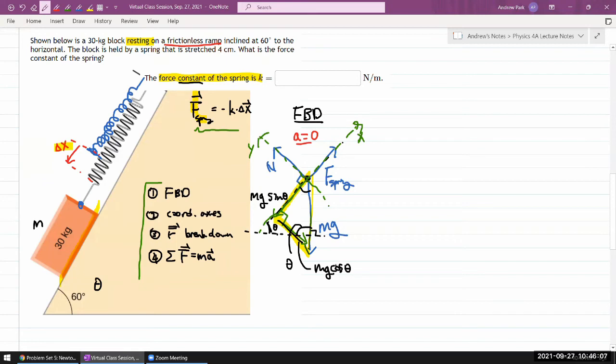I think I'm done with step number three, so we are ready to do step number four. We have one object, two dimensions, so we should be writing down two equations. Net force in the x direction is equal to - I have two forces: the spring force and the gravitational force.